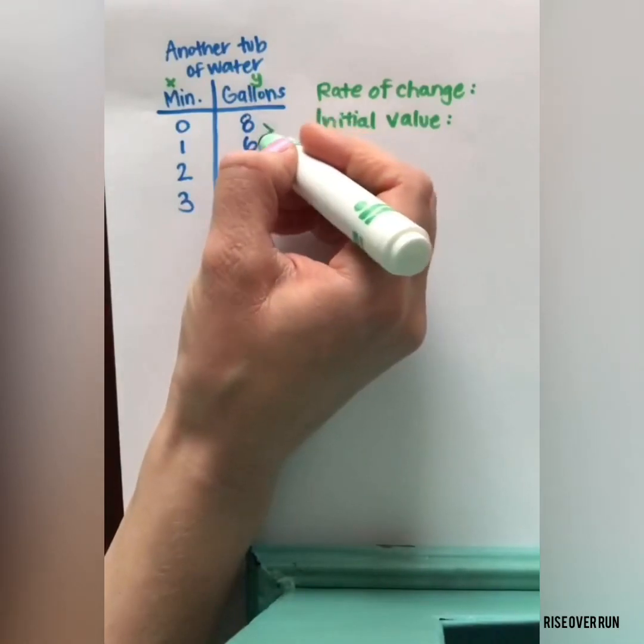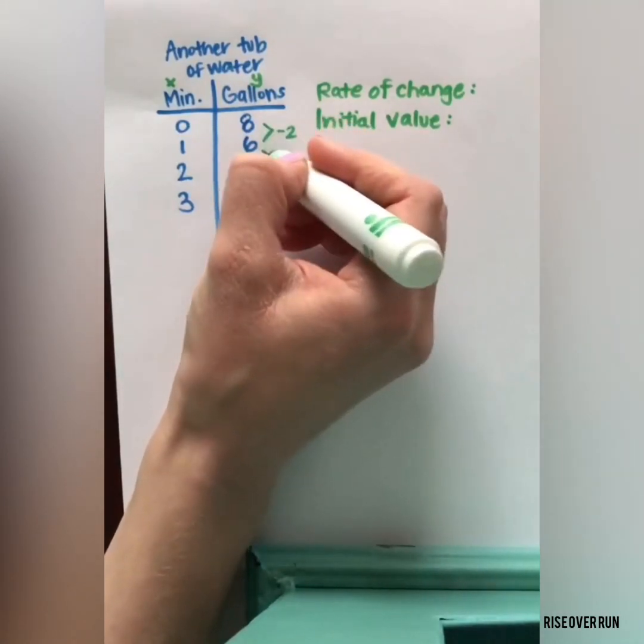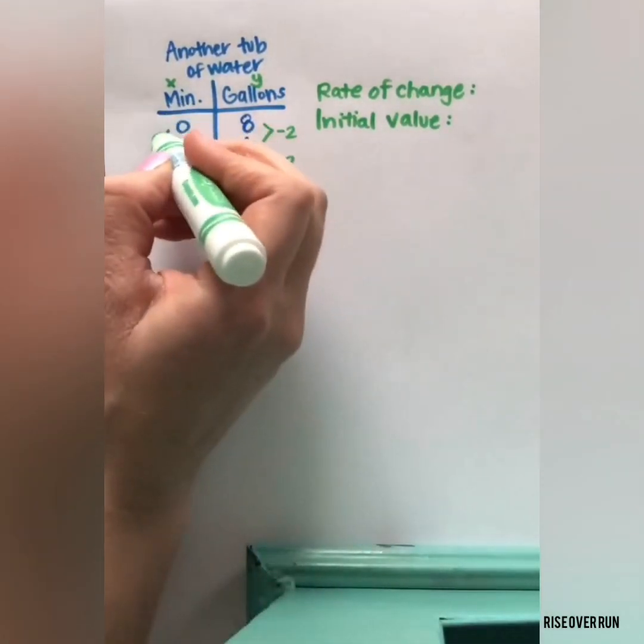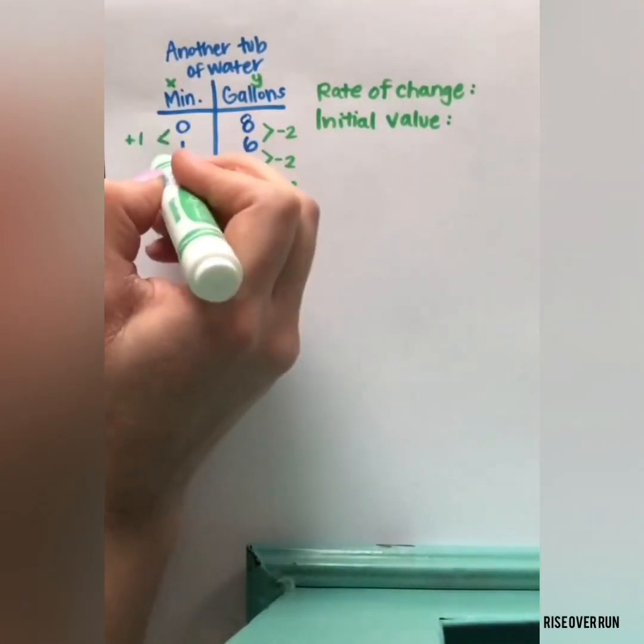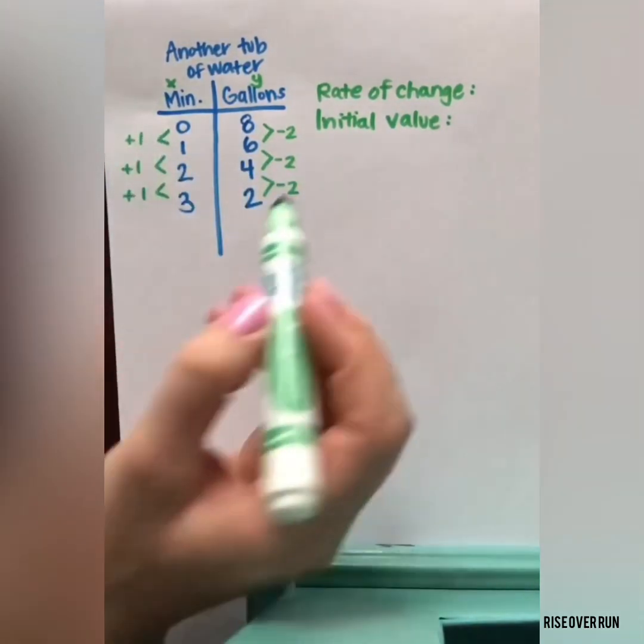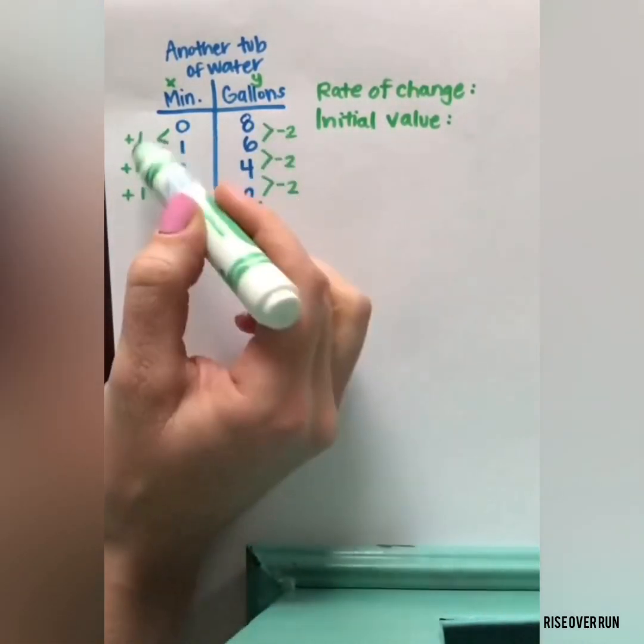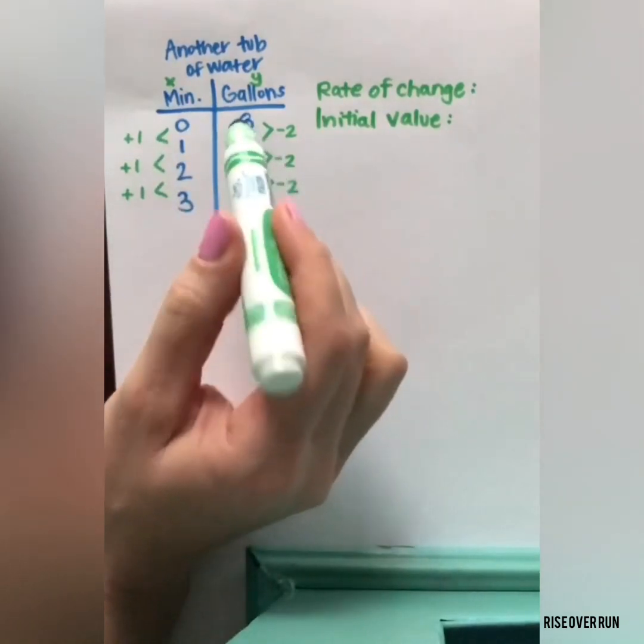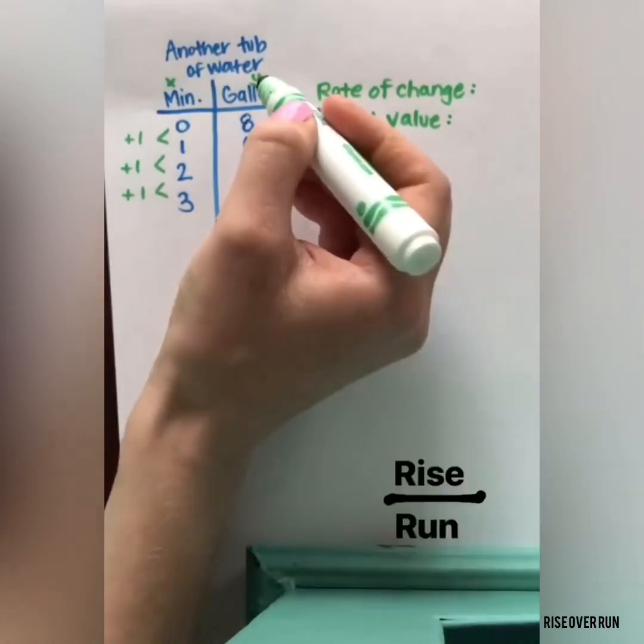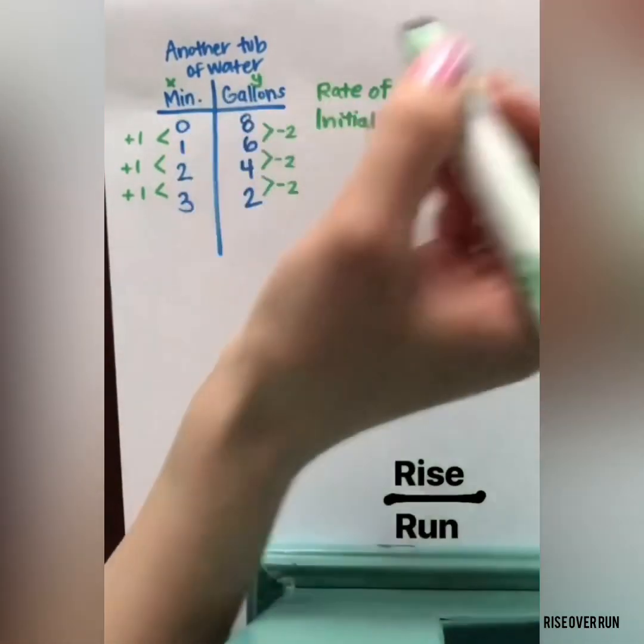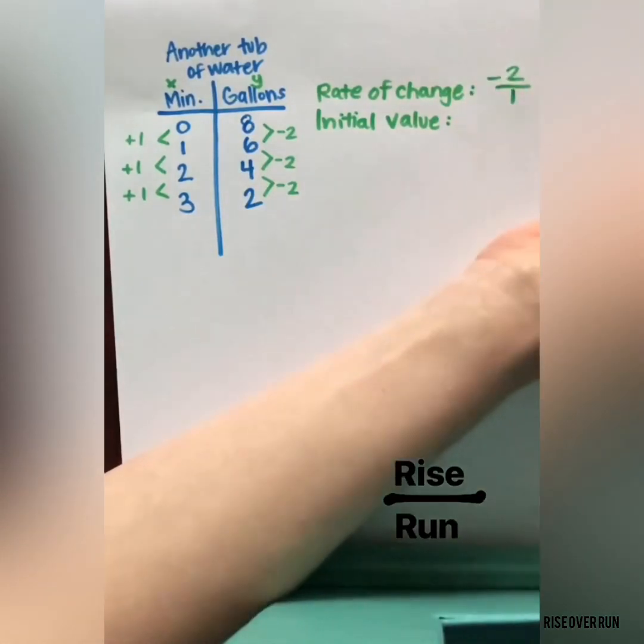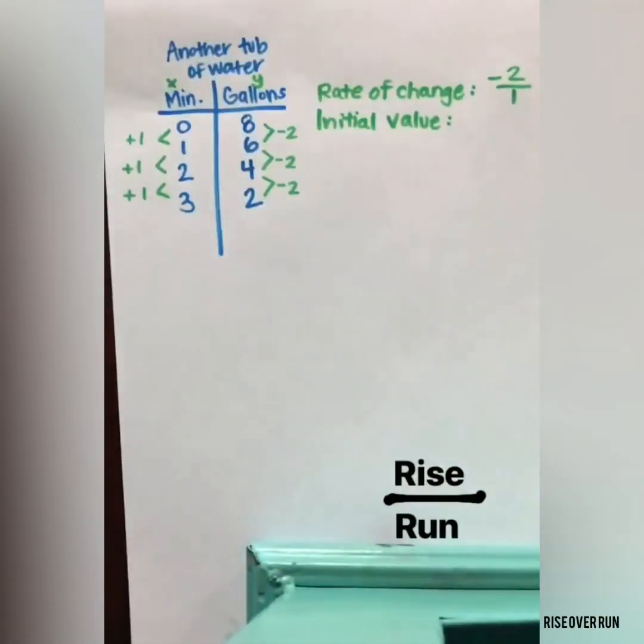So here we can see this is decreasing by 2. We can see our x is increasing by 1. If these values are the same, that is proving that this is a linear function. And then to give the rate of change, you want to do the change in y over the change in x. So negative 2 over 1 or simply negative 2.